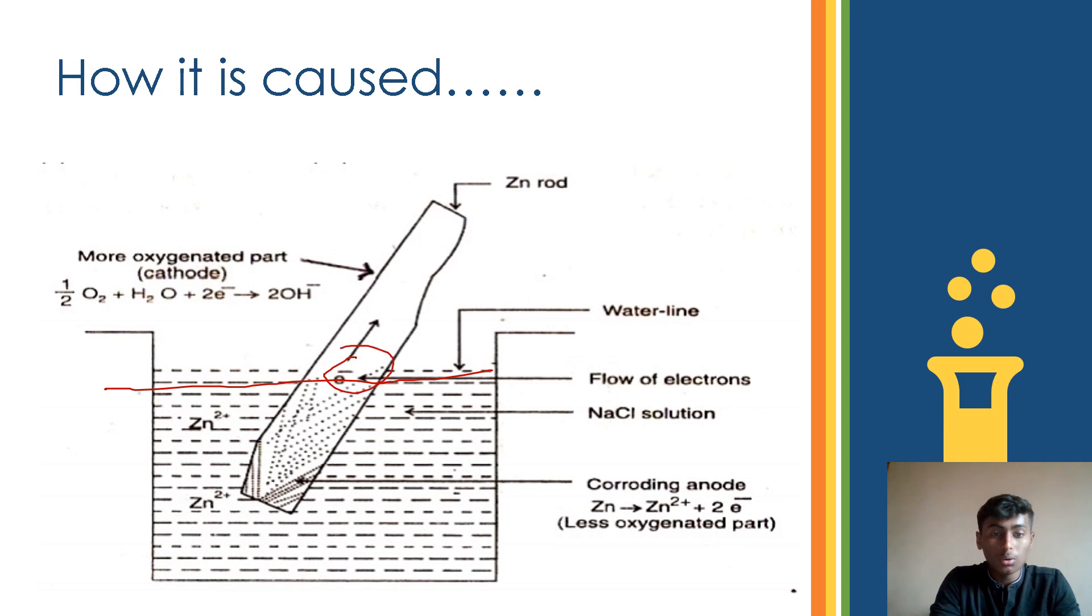Below this is where the electrons are flowing. The zinc rod, the zinc element is oxygenated, so this is the anode part. This is the cathode part. The anode part is corroding, and this is the area which is unaffected.